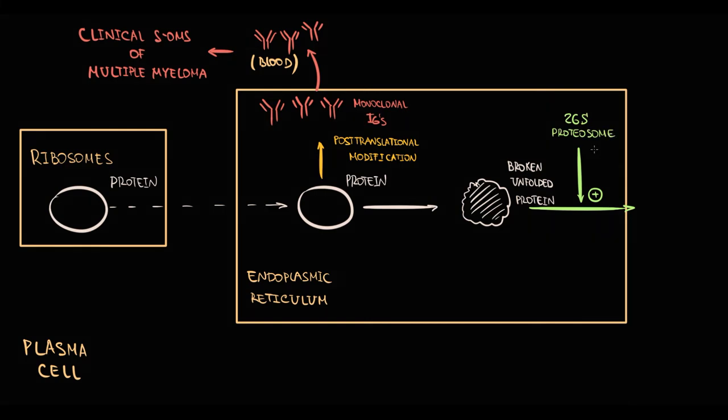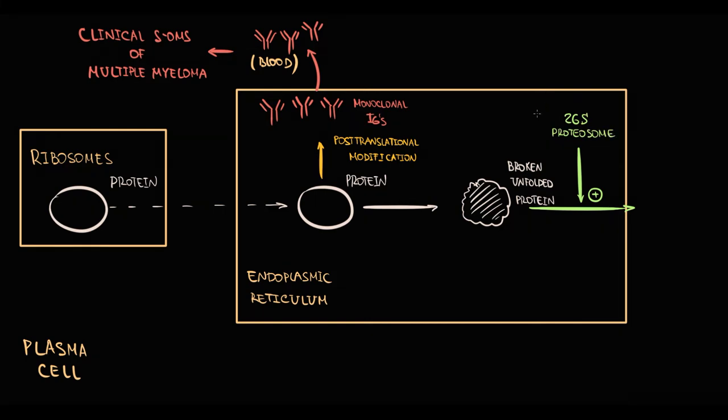We have to know that 26S proteosome complex is composed of two 19S subunits and one 20S subunit. The activity of proteosome is controlled by a so-called ubiquitin proteosome system. Proteosomes degrade proteins into small peptides that can be easily eliminated by the cell.